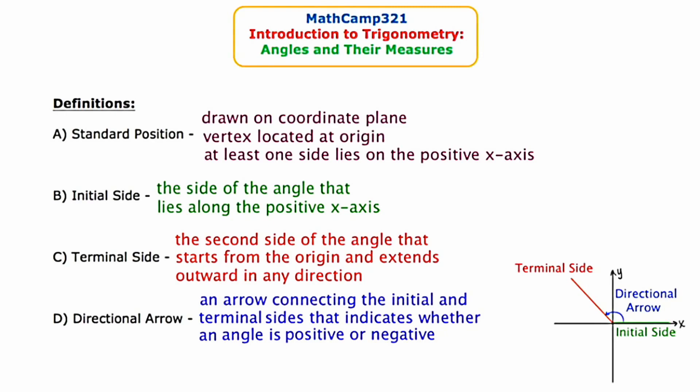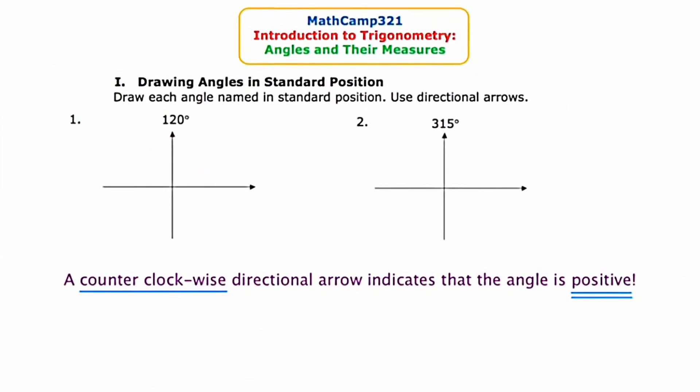Let's move on to slide two, where we're asked to draw angles in standard position. The directions say: draw each angle named in standard position and use directional arrows. Notice that each angle on this slide is a positive angle, so we're going to be using a counterclockwise directional arrow. Because the angles are in standard position, let's go ahead and draw in the initial side, which runs along the positive x-axis.